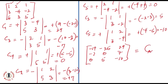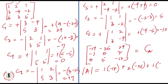Now from this cofactor matrix, the first thing to deduce is the determinant of matrix A by multiplying the first row elements by their cofactors: 1 × (−14) plus 2 × (−25) plus 1 × 29 = minus 14 minus 50 plus 29 = minus 35. So the determinant is minus 35.